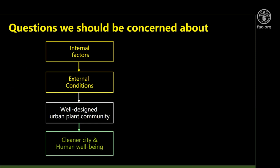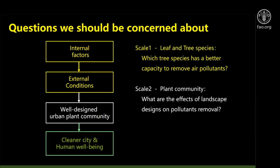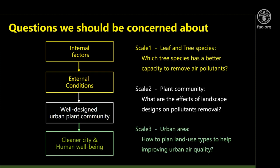The questions we're concerned about regarding urban forest and air pollutants should be seen from different scales. At the first scale, focusing on internal and external factors, we focus on the leaf and tree species — which tree species has better capacity to remove air pollutants? At the second scale, we focus on the plant community — what are the effects of landscape design on pollutant removal? At the third scale, we look at the whole urban area — how land use types can help improve urban air quality.